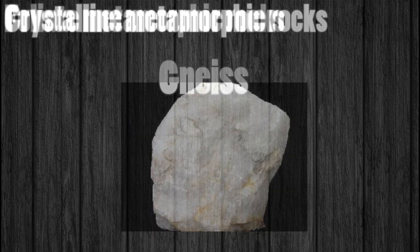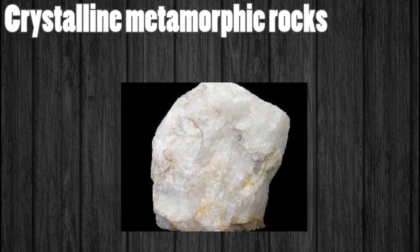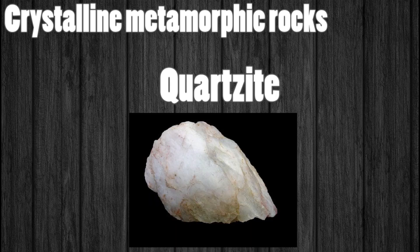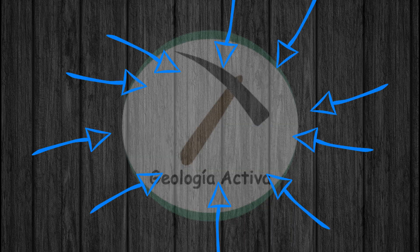The second group of metamorphic rocks are crystalline rocks. These rocks do not have sheets; they are characterized by breaking irregularly without separating into layers, and are generally homogeneous and composed of few minerals. The best known crystalline metamorphic rocks are marble, which comes from the metamorphism of carbonate rocks such as limestone and dolomite and can present various colors and veins of different shades, and quartzite, which comes mainly from the metamorphism of quartz sandstones, with quartz as its main mineral, presenting colors ranging from white to pink, and is very hard and resistant to weathering.